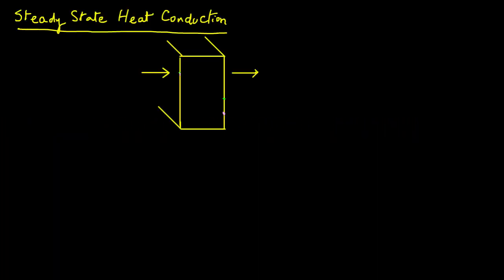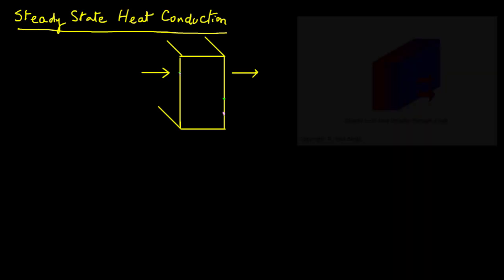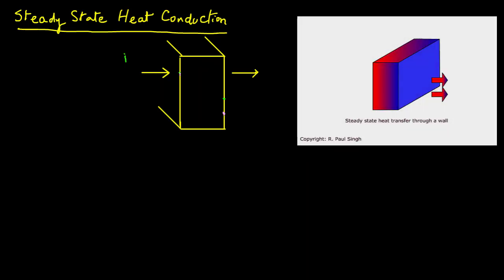In this module, we will try to get an understanding of steady-state heat conduction, and then we will develop a mathematical expression to determine the rate of heat transfer across a rectangular wall under steady-state heat transfer conditions. Recall from the earlier module on conduction, we were looking at an example of heat transfer through the wall of a house.